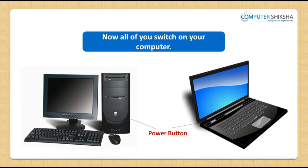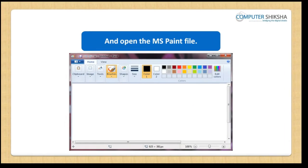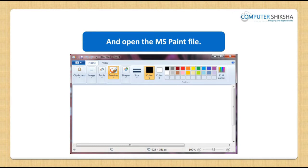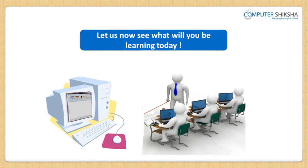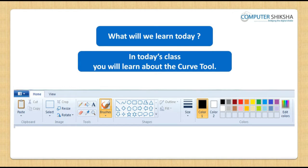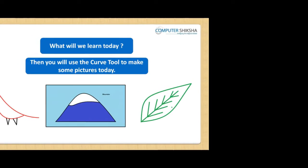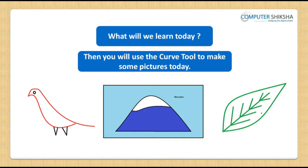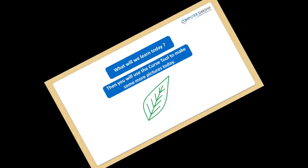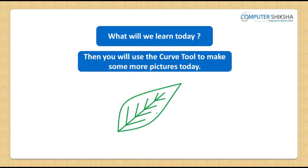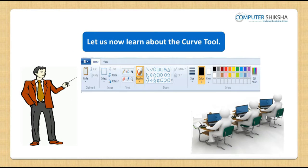Now, all of you power on your computer and open the MS Paint file. Let us now see what you will be learning today. In today's class, you will learn about the curve tool and get to know what the curve tool is. Then you will use the curve tool to make some pictures — a bird, a mountain, a flag, and also a leaf.